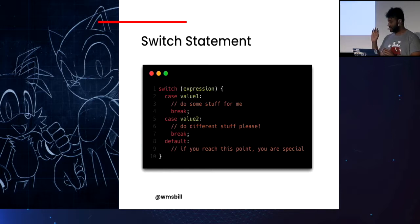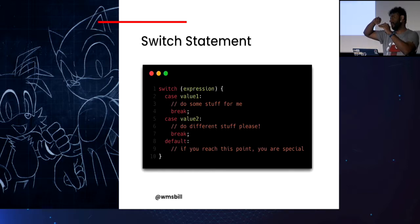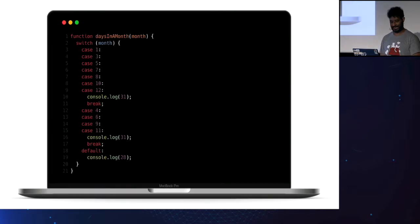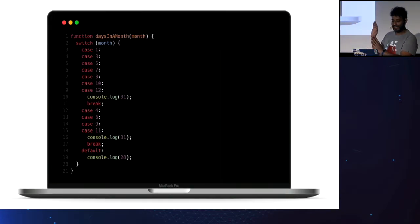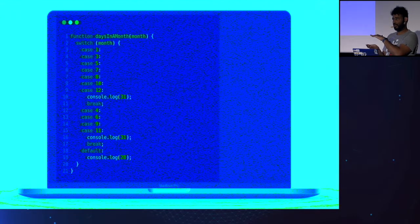The `switch` statement works as follows: a given expression inside the parentheses tries to match one of the `case` statement values. If it matches, execution enters at that point and continues until the end, which is why we have `break` to exit. I'm showing an example of returning the number of days in a given month — not accounting for leap years — just to show that you can group multiple cases to one output.